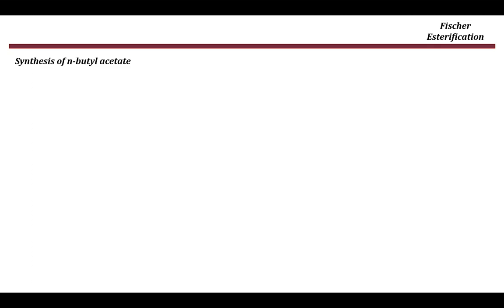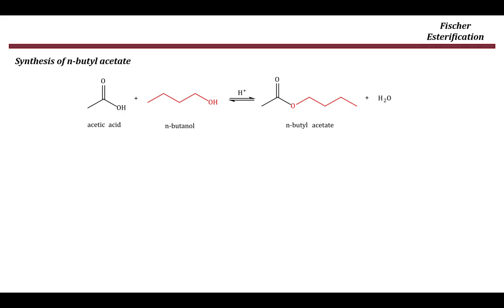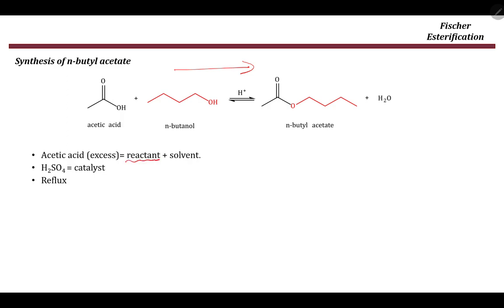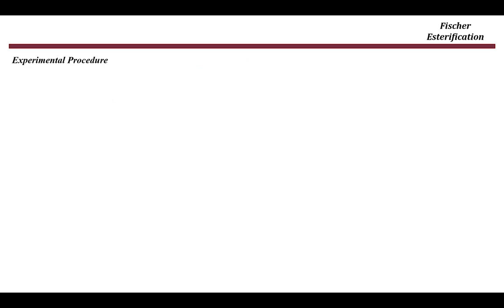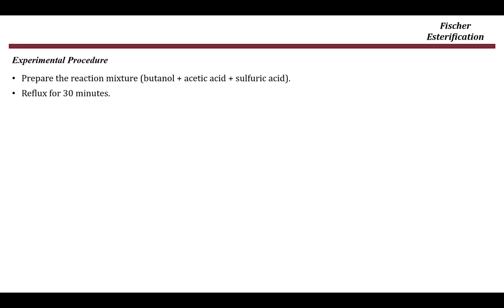In our experiment, we will be synthesizing n-butyl acetate. We start with acetic acid and add n-butanol; the product is n-butyl acetate plus water as a byproduct. Acetic acid is used in excess to push the equilibrium to the right and increase yield; it plays a dual role as both reactant and solvent. H₂SO₄ is used as the catalyst, and we reflux the reaction mixture for 30 minutes to increase the yield and rate of the reaction.